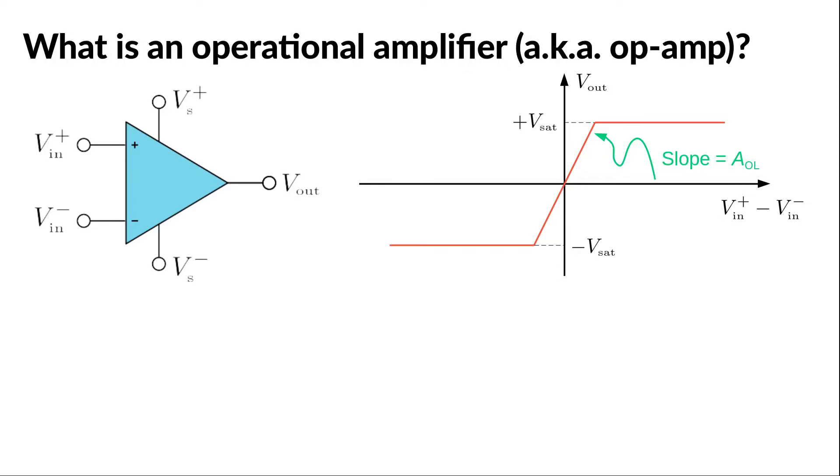Now, remember that we said that the open-loop gain is large, typically 100,000 for the LM741 op-amp. So, the oblique line is actually almost vertical and the linear region is extremely small.